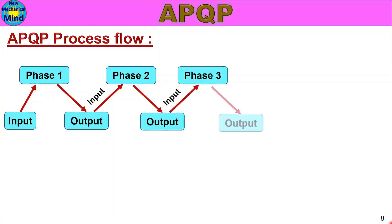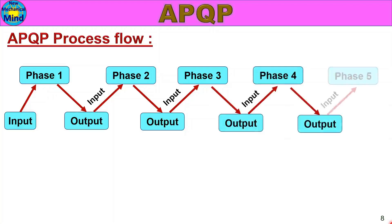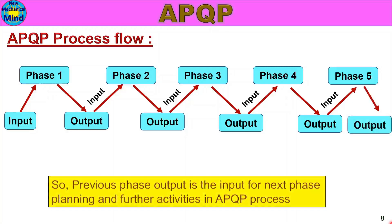In Part 4, we will see the product design and development. The previous phase output is the input for the next phase, planning and further activities in the APQP process. In the process flow, previous phase output is the input for the next phase. If you know the APQP process flow, you can see the APQP activities and steps in detail.